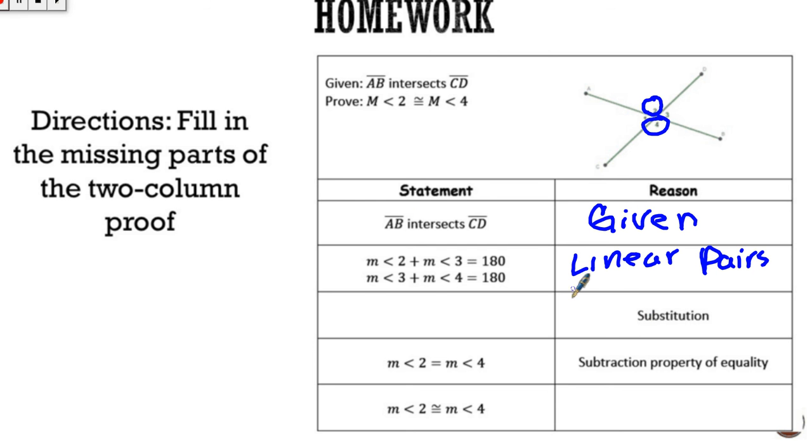Next, the reason is substitution. Then what this is saying is I can say the measure of angle 2 plus the measure of angle 3 should equal the measure of angle 3 plus the measure of angle 4, because they both equal 180. So I can set these two parts right here equal to each other.